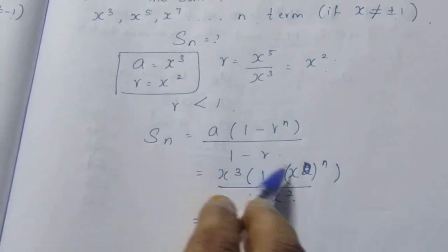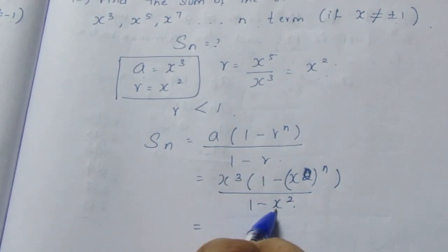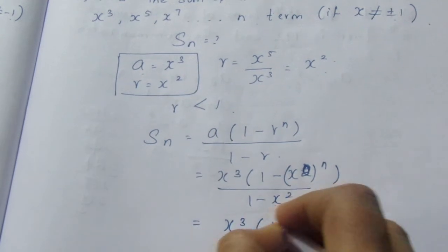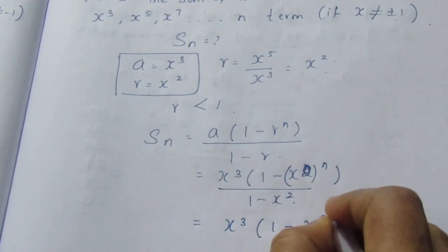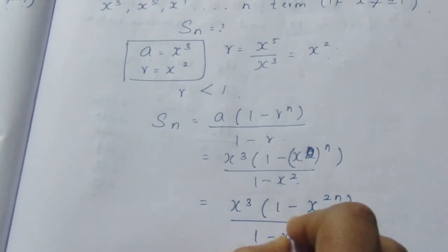R is x square. Here the whole power n. This becomes x cube times 1 minus x power 2n. The 2 into n will become 2n, divided by 1 minus x square.